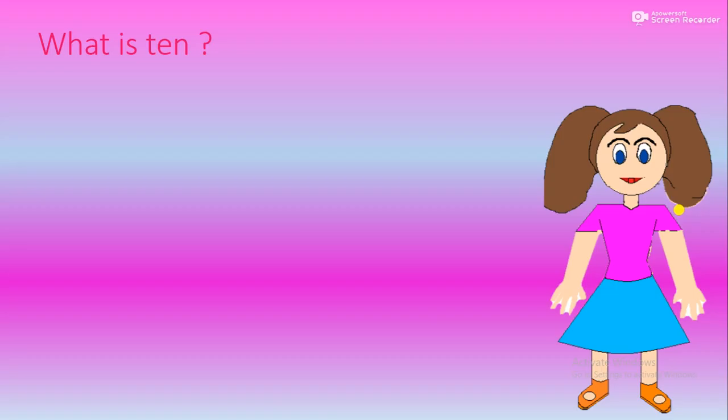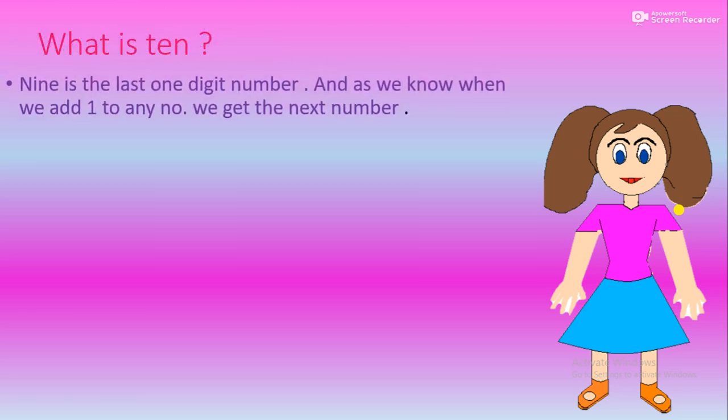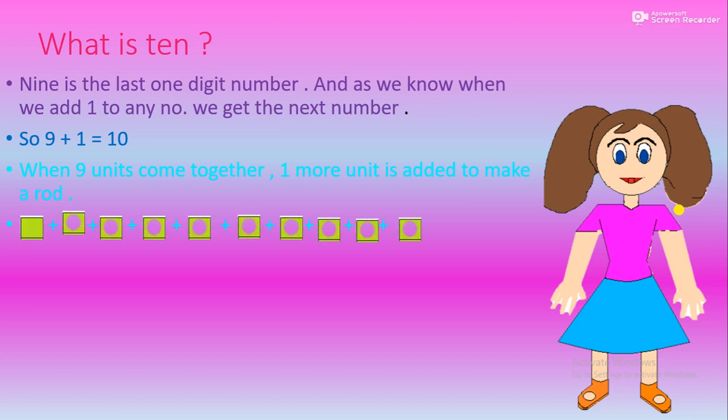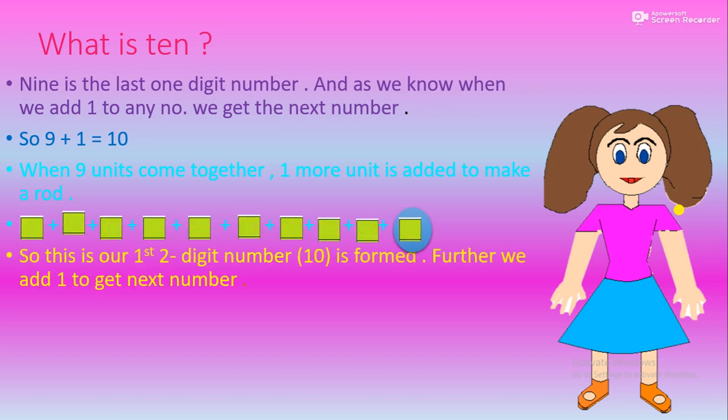What is 10? Nine is the last one digit number, and as we know when we add 1 to any number we get the next number. So, 9 plus 1 equals 10. When 9 units come together, 1 more unit is added to make a rod. So, this is our first 2 digit number is formed.